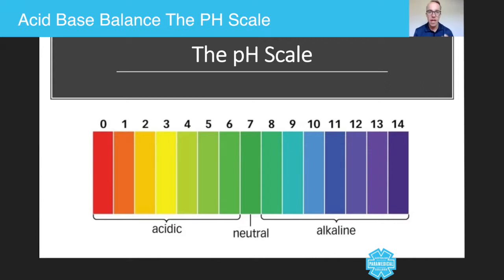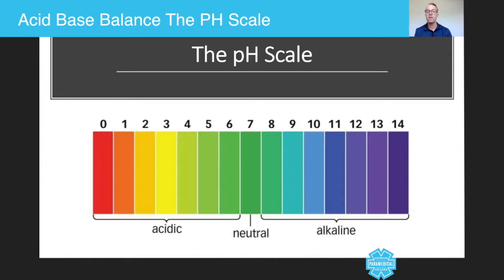Now everything that we eat, every time we take something into our mouth and break it down and it goes into our body and becomes smaller and smaller — the nutrients end up in the cells and float around in the blood. Every time we take a deep breath in and out, and every time we go to the toilet and excrete, all of these things are altering the pH of our blood.